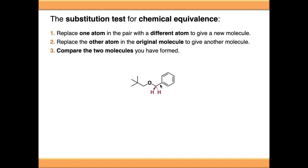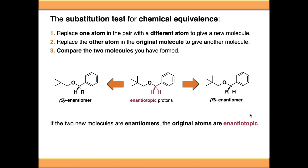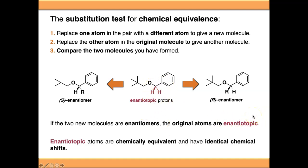If we change to a different compound and perform the same substitution test — replacing each proton in turn — the two resulting molecules are enantiomers: non-superimposable mirror images. If the two new compounds are enantiomers, then the original atoms are enantiotopic. Enantiotopic protons, like homotopic protons, are also chemically equivalent and have identical chemical shifts, so they are not diastereotopic and give a single signal in the NMR spectrum.